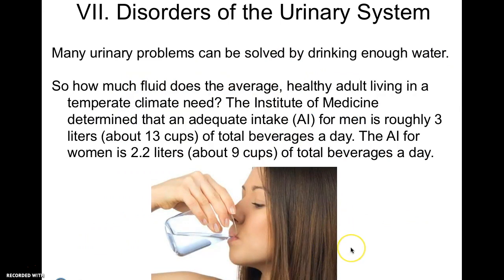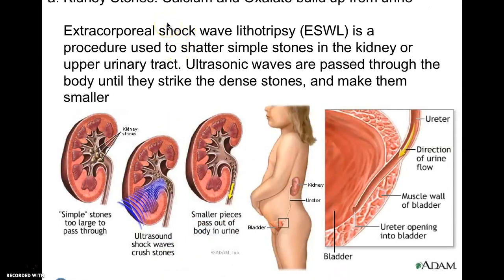Some disorders of the urinary system: many urinary problems can be solved by drinking enough water. If you have kidney stones, drinking water helps, though some are genetic. You want to drink about 3 liters — about 13 cups of beverages — per day, and that means water, not soda. Kidney stones occur due to calcium and oxalate buildup from urine. Certain things high in calcium or oxalate include black tea, and some people are sensitive to kale or spinach. Soda is also a big contributor.